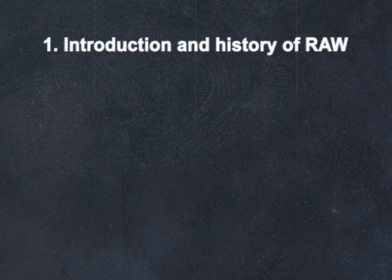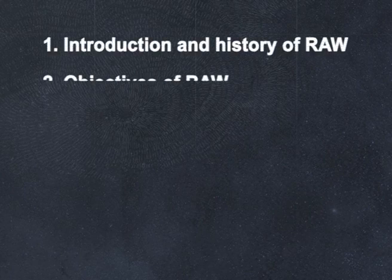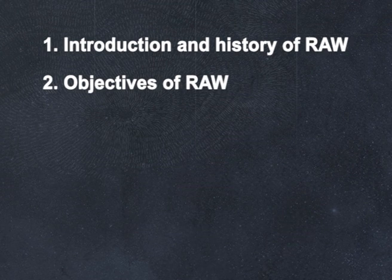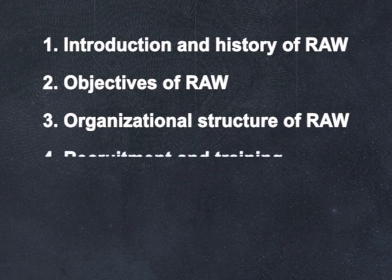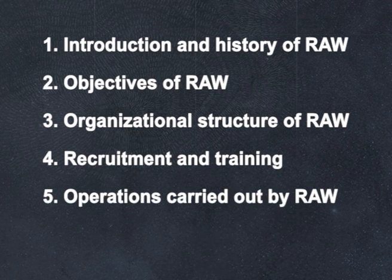Today's lecture will be on Research and Analysis Wing and it is divided into different modules. Module 1 will be Introduction and History of RAW. Module 2 will be Objectives of RAW. Module 3 will be Organizational Structure. Module 4 will be Recruitment and Training. Module 5 will be Operations Carried Out by RAW. And finally, Module 6 will be our Conclusion. Today you will be fascinated to know about the most interesting system of the Indian Intelligence Services, that is RAW.